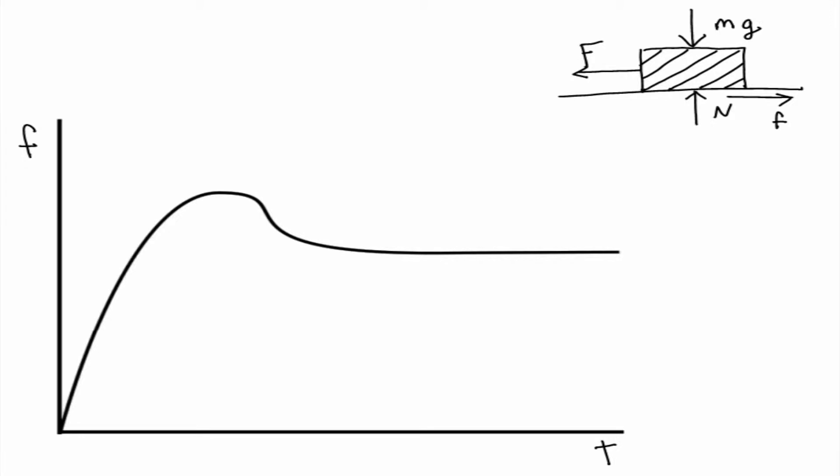So let's look at our free body diagram first. We have our weight acting down on the object, our normal force acting up on the object, and we have our force acting horizontally to one direction, and our friction force acting on the opposite direction.